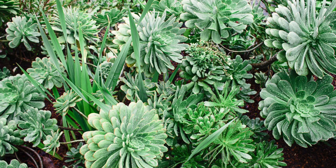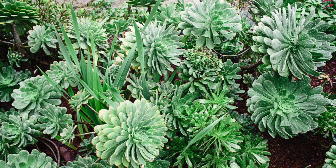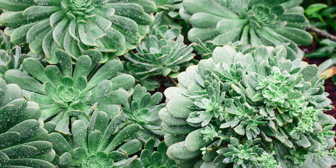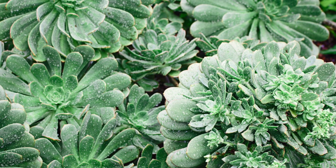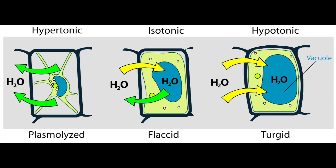Plants rely on osmosis to support their stems and leaves. Water moves into plant cells by osmosis, which causes the vacuole to swell up and press against the cell walls, making the cell hard and rigid. Pressure builds up until no more water can enter the cell — this is known as turgor. This means plant cells need the surrounding fluids to be more dilute so that water doesn't leave the cell.